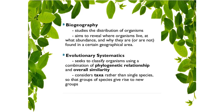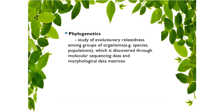Evolutionary systematics is also one of the component fields of plant systematic. In this, we seek to classify organisms using a combination of phylogenetic relationship and overall similarity. Evolutionary systematics deals with phylogenetic relationships and the degree of evolutionary change. The last component field of plant systematic is phylogenetics. Phylogenetics is the formal name of the field within systematic that reconstructs the evolutionary history and studies the patterns of relationships among organisms.